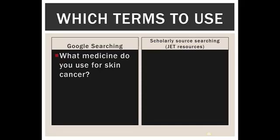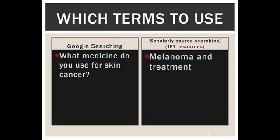A word like 'what' isn't specific enough — it's going to come up in all kinds of articles that are irrelevant. So the most important words here are something like 'skin cancer,' except professionals in the field aren't going to use a layman's term like skin cancer. They're going to use a more specific term, like melanoma and treatment.